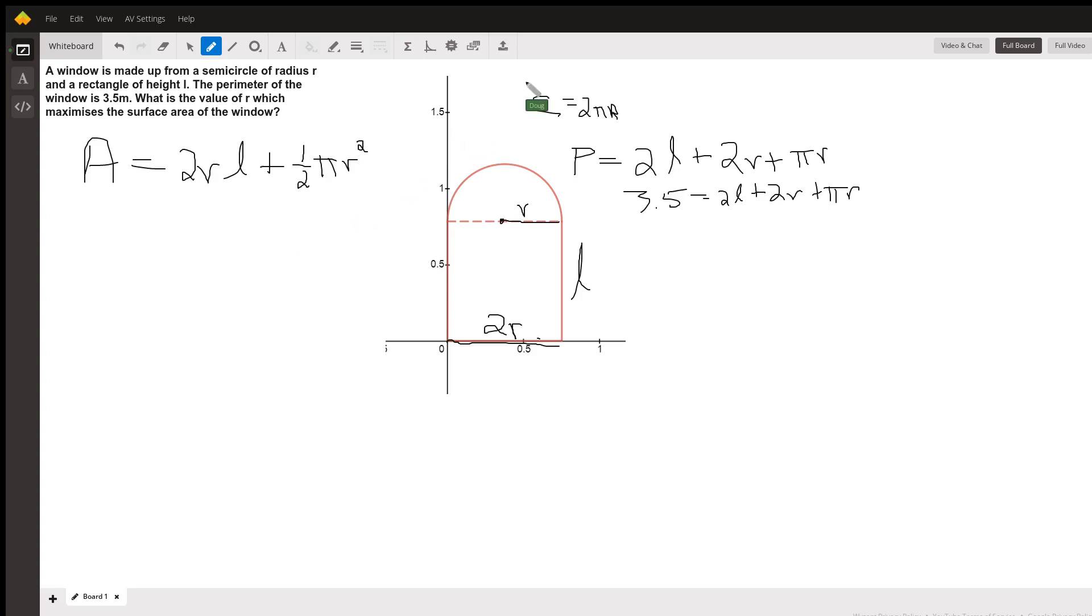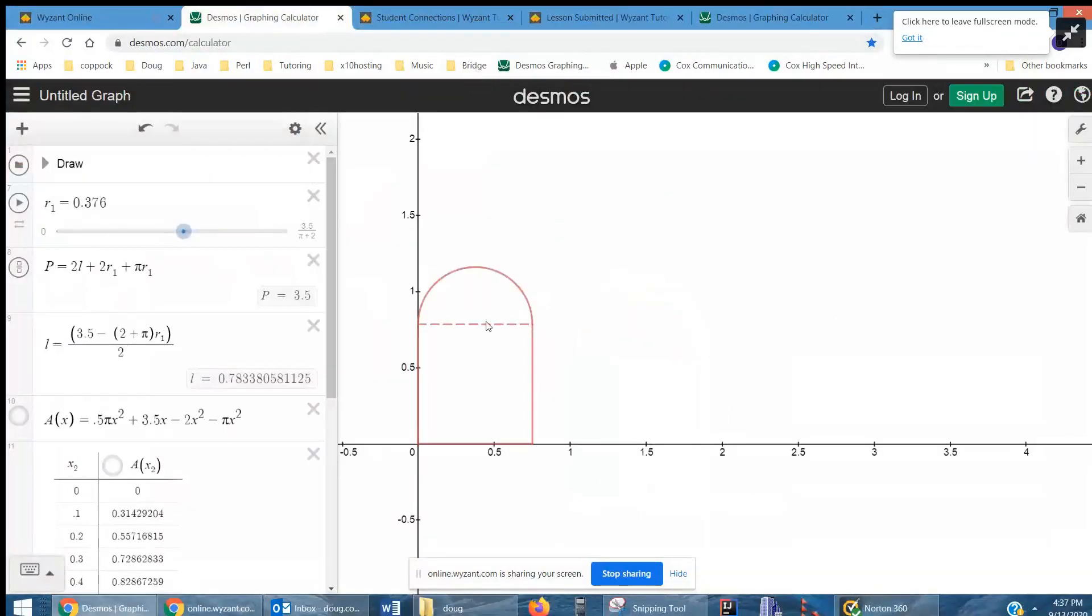Just to see what's going on here, I'm going to share my screen. Go to Desmos. And here's that window. And if I change R, there's the different shapes that this window can take on, depending on R. And notice that the perimeter is staying constant, 3.5. So different windows can have different shapes, but the same perimeter, depending on R.